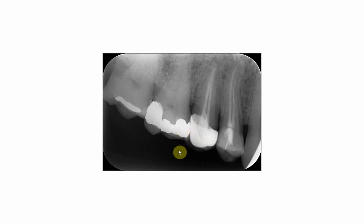This is expected because the thickness of the material used in the core is less than that of amalgam, and of course amalgam is a denser material because of its components, so it will appear more radio-opaque. If we look at the root of the tooth, we will see that it is filled with gutta-percha, which has the least radio-opacity of all these materials because of its components.